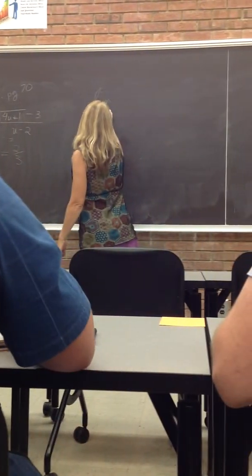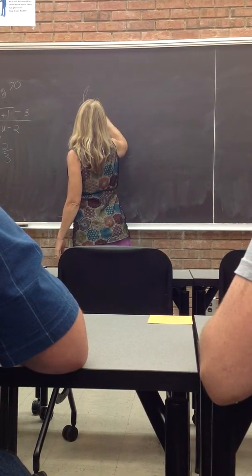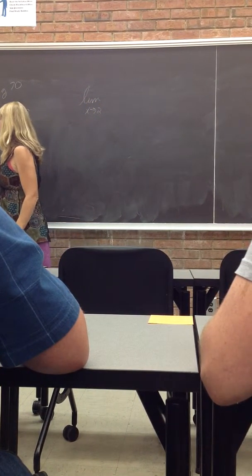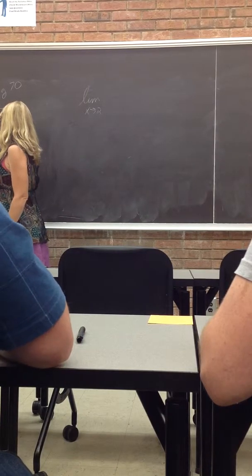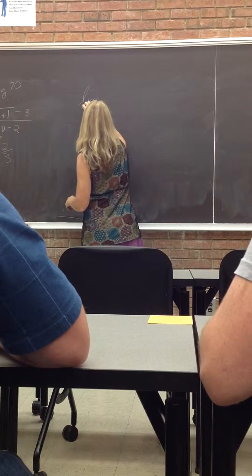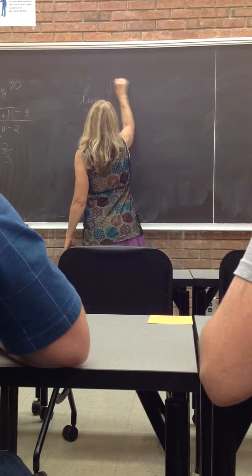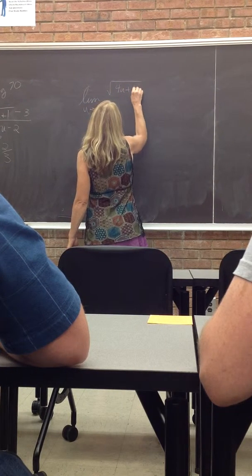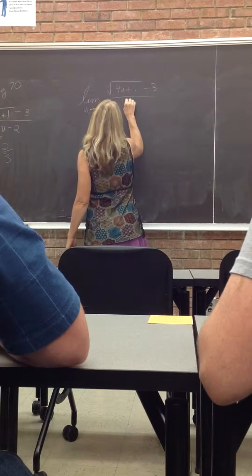So I'm trying to find the limit as x goes to 2 of... Or sorry, I was saying x, it should be u. Sorry. They were using u as the variable. So 4u plus 1 minus 3 over u minus 2.